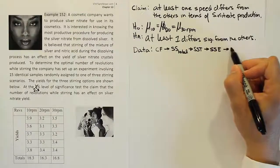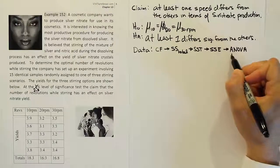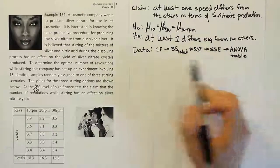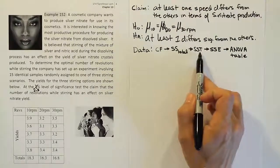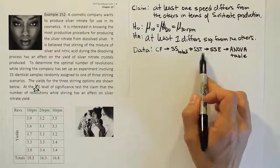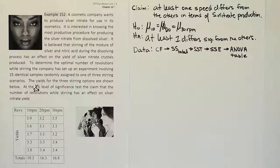After that, we move everything to the ANOVA table and finish up the process there. We do these things in order because we'll need the correction factor for the sum of squares total. When we do the sum of squares treatment, we'll also need the correction factor. Then we'll need both the sum of squares total and sum of squares treatment for the sum of squares error. Finally, we'll need all those things for the ANOVA table. So we do them in that order to ensure everything is ready when we need it.